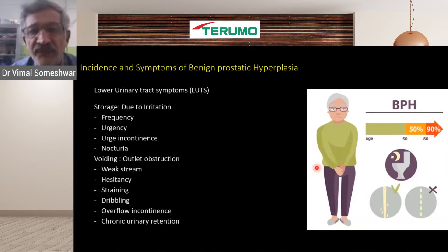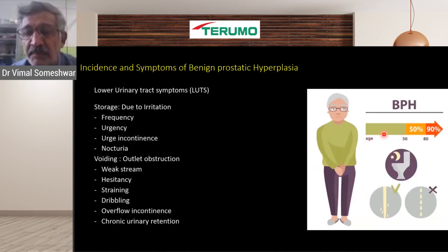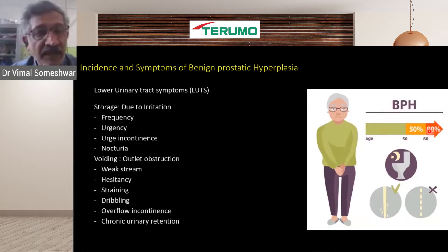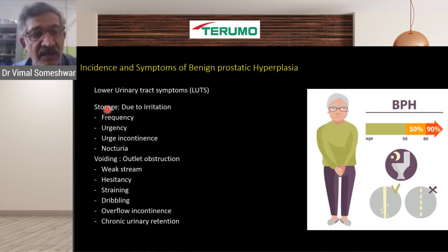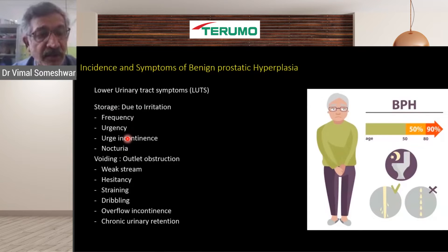The incidence of benign prostatic hypertrophy is quite high. By the time a male patient is about 50 years of age, 50% will have benign prostatic hypertrophy, and by age 80, 90% will have symptoms. The symptoms are called lower urinary tract symptoms or LUTS. There are storage symptoms: as urine accumulates in the bladder, irritation leads to frequency, urgency, urge incontinence, and these symptoms are more common during the night, totally deranging the patient's lifestyle.